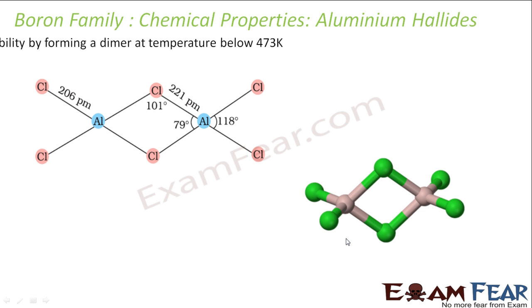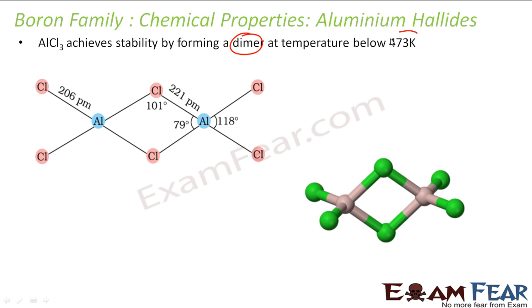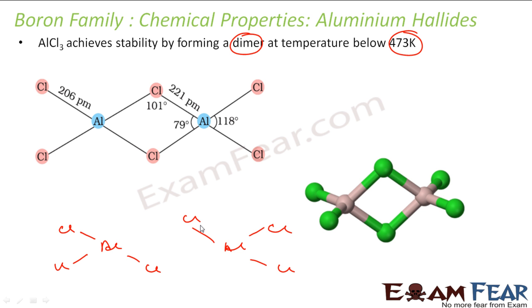Now let us see aluminum halide. Aluminum halide forms a dimer structure at temperatures below 473 Kelvin. Each aluminum has 6 electrons (2+2+2), and since both aluminums are electron deficient, one aluminum forms a coordinate bond with a bridging Cl from the other, giving both 8 electrons. That is why it forms the dimer structure, where the terminal Al–Cl bond length is 206 pm, the bridging Al–Cl bond is 221 pm, the angle is 118°, and the bridge angle is 79°. This is the 3-dimensional structure of aluminum halide.